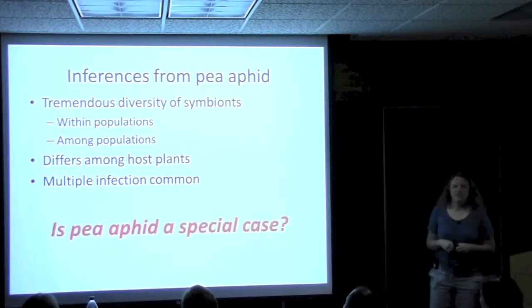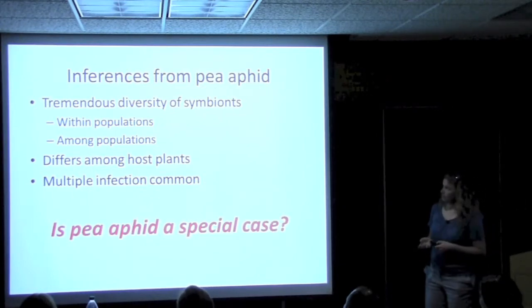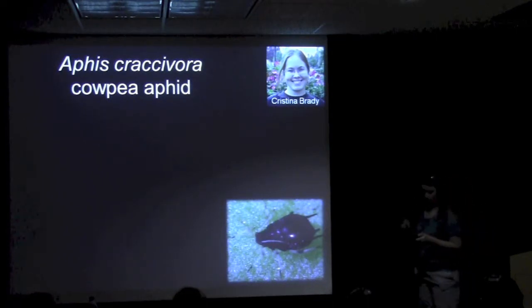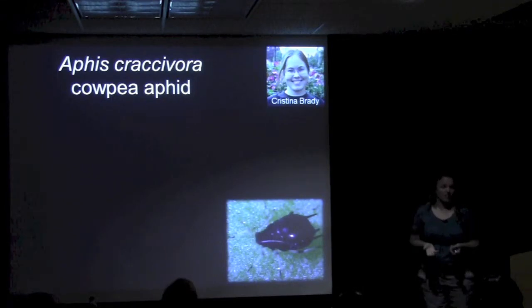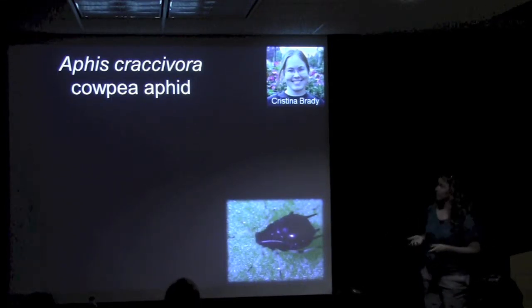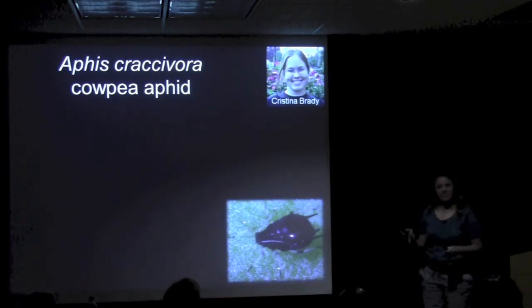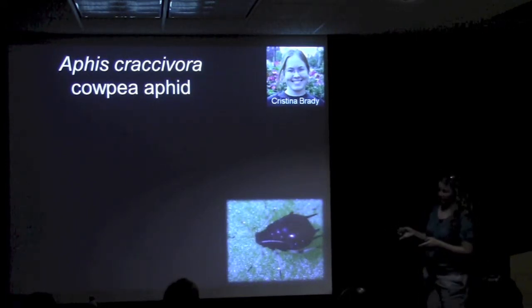But we don't know whether this is a special case — it's the singular case where we really have a lot of information. Enter my student Christina. She is just about done with her master's degree. The purpose of her master's was to do the same sort of work but in a different aphid. Despite the somewhat confusing name 'cowpea aphid' rather than 'pea aphid,' I'll emphasize this is a completely different subfamily of aphid — a different genus, Aphis craccivora.